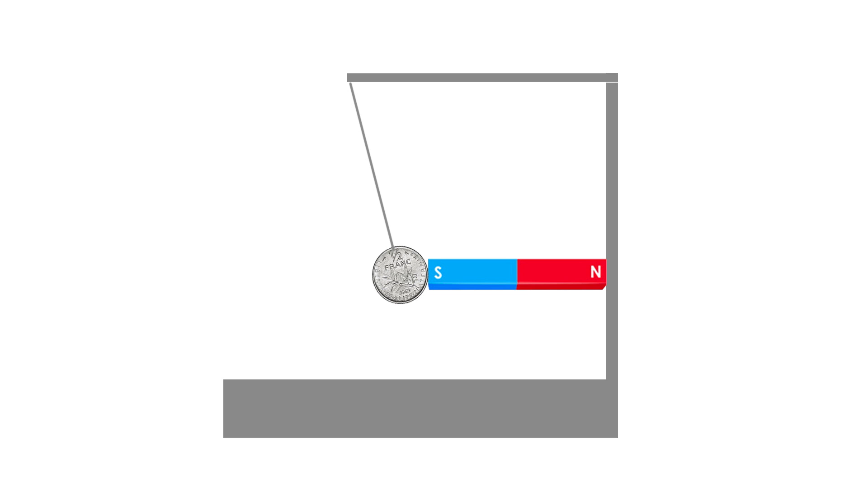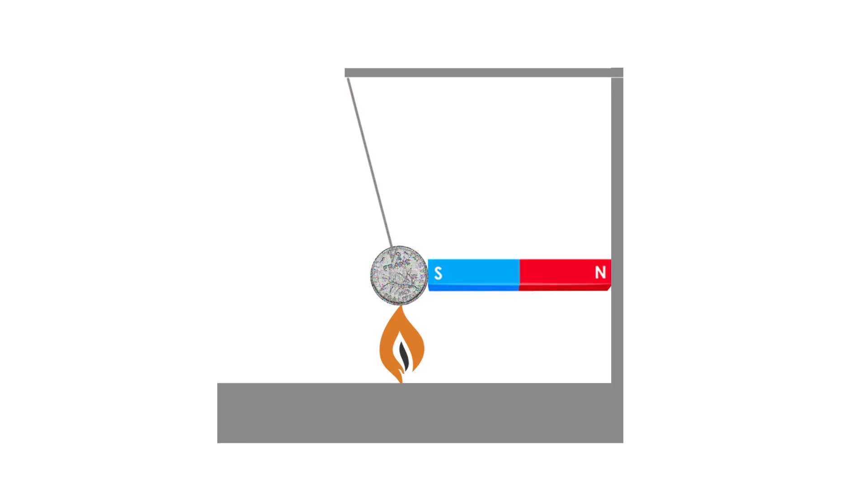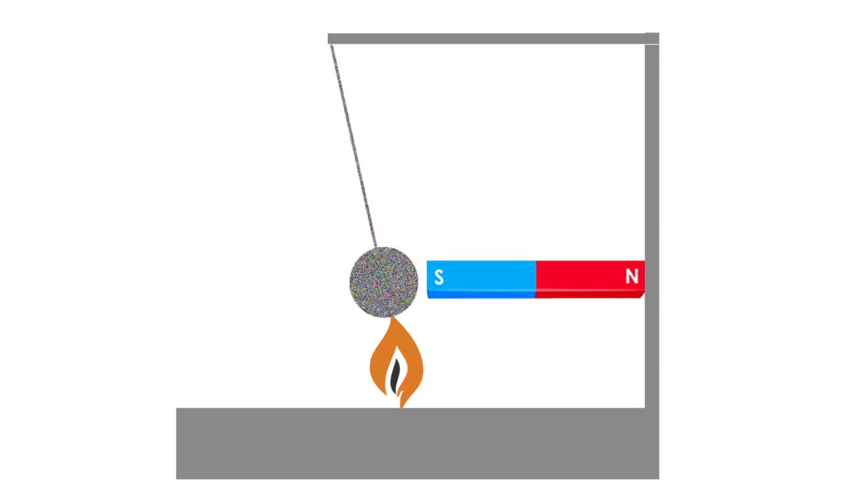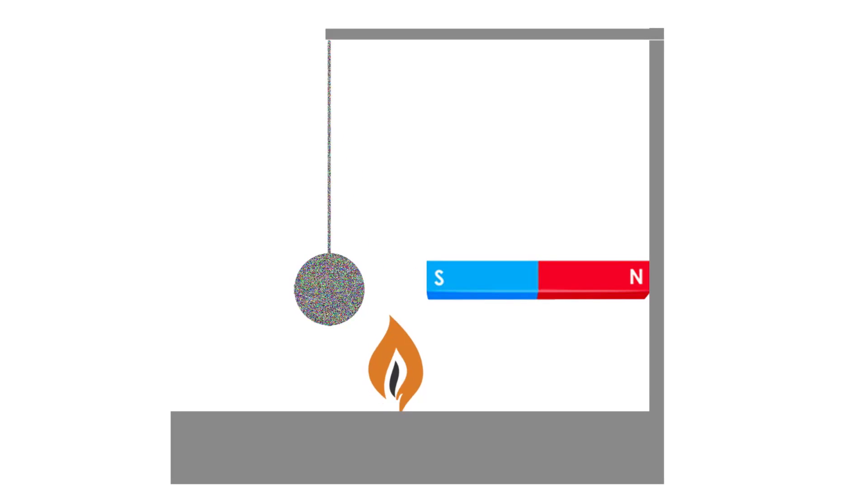Under the coin I will place a candle, so that when it is heated, it loses its ferromagnetic properties and is released from the magnet, so it moves away from the candle. It will cool down and acquire the ferromagnetic properties and it will be attracted again by the magnet.